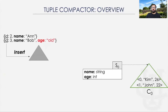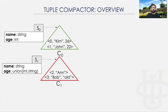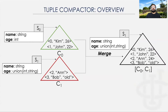When the next batch of data comes to the system, we do the same. The data gets inserted into the memory component and then gets flushed into a new on-disk component. However, in this example, we see that the age field is of type string. So the Tuple Compactor changes the type of age from integer to a union of integer and string. When we merge two disk components with two different schemas, the latest schema S1 is a superset of all previous schemas. So we only write the schema of the latest component into the newly created component.